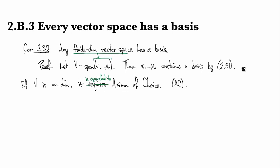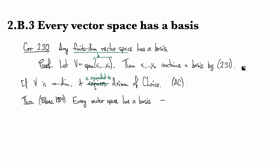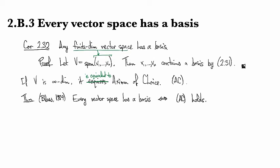It was shown by a guy called Andreas Blass just in 1984, so pretty recently, that the statement every vector space has a basis is equivalent to saying that the axiom of choice is true. I'm not going to get into it in super great detail because we're not going to need it for this course.